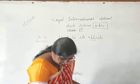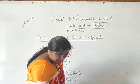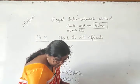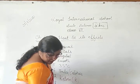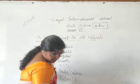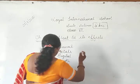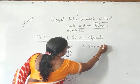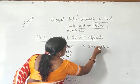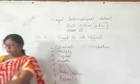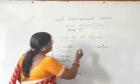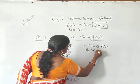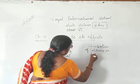Sixth: heat is measured in joules, calories ho gaya. Seventh: heat causes sensation of hotness or coldness — yeh seventh aega, sensation of coldness or hotness.